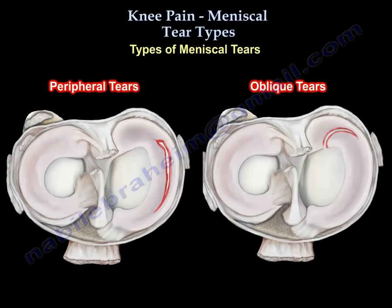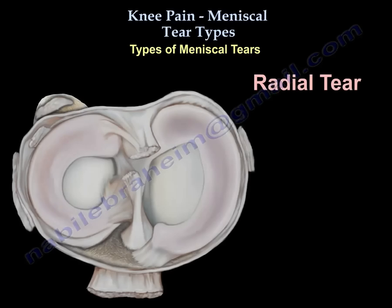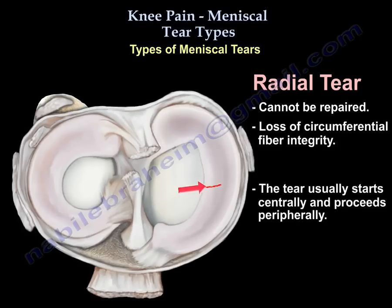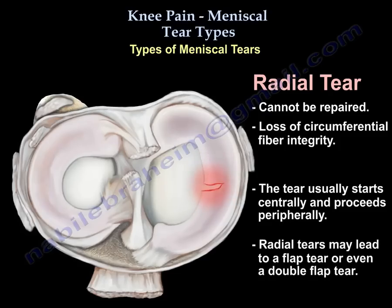So we've seen the peripheral tear and the oblique tear. Now the radial tear, which cannot be repaired. In this case, we lose the circumferential fiber integrity. It usually starts centrally and proceeds peripherally. It can lead to a flap tear or a double flap tear.